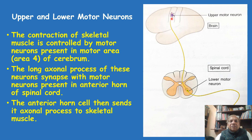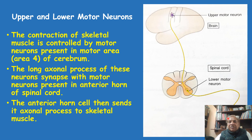These neurons send their long axon into the spinal cord. In the spinal cord, the terminal end of this axon will synapse with another motor neuron present in the ventral horn of the spinal cord. The axon of this anterior horn cell then sends its axon into the muscle, where it will form the neuromuscular junction.